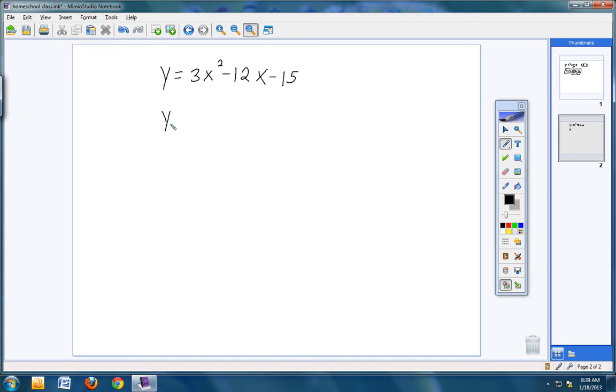And when I do, it becomes really easy then. So factor out a 3. 3 divided by 3 is 1x squared. Negative 12 divided by 3 is negative 4x. And negative 15 divided by 3 is negative 5. Look at that.